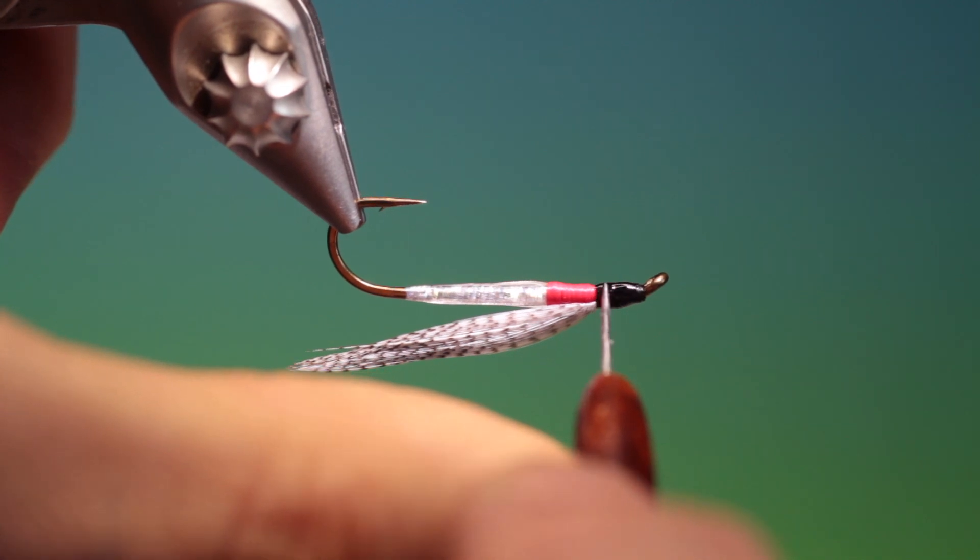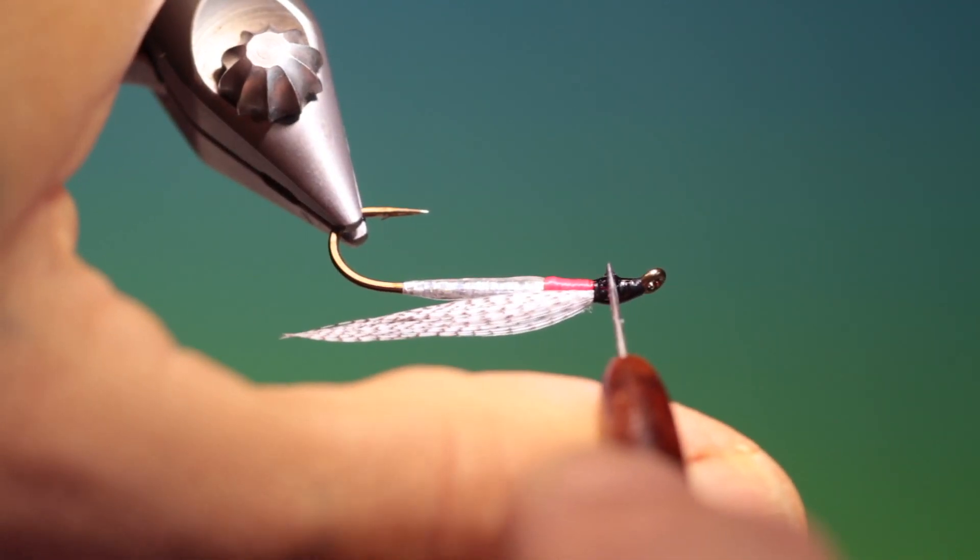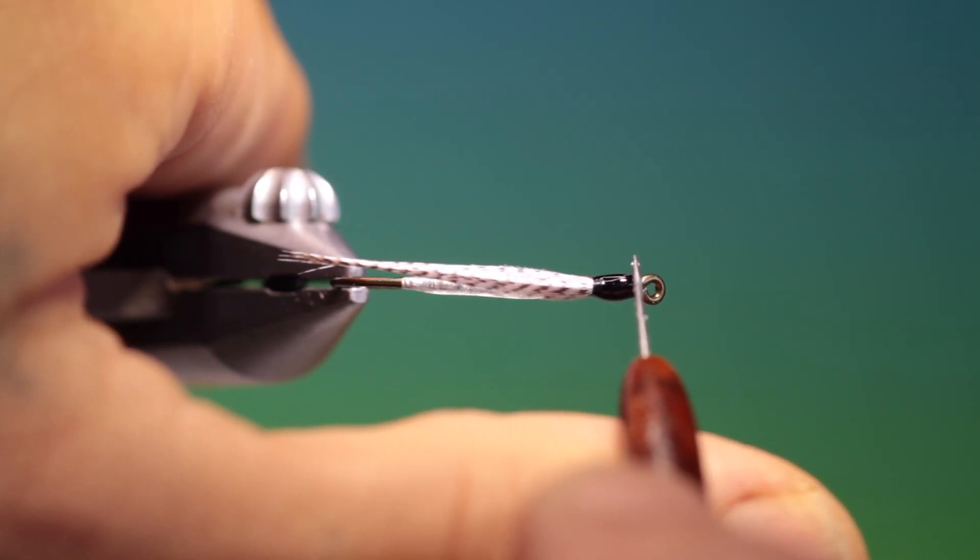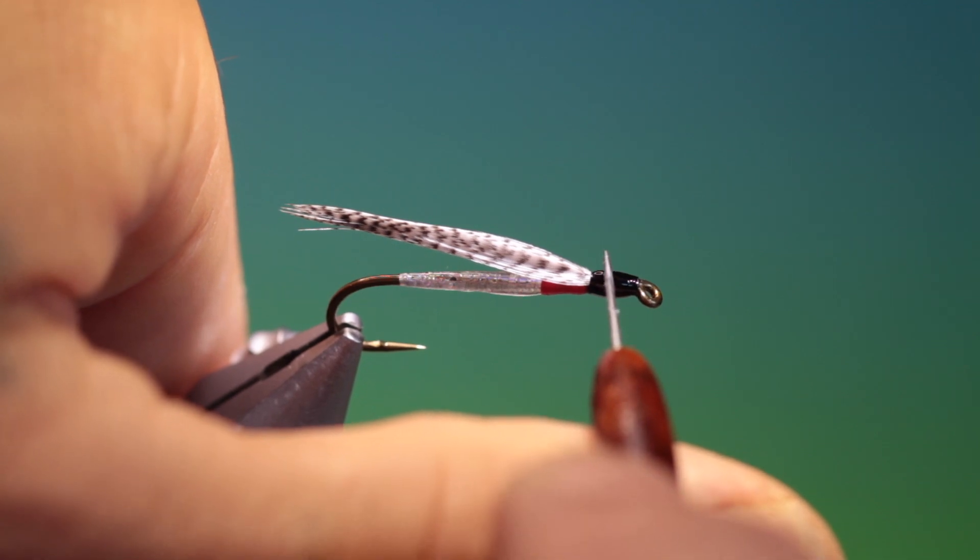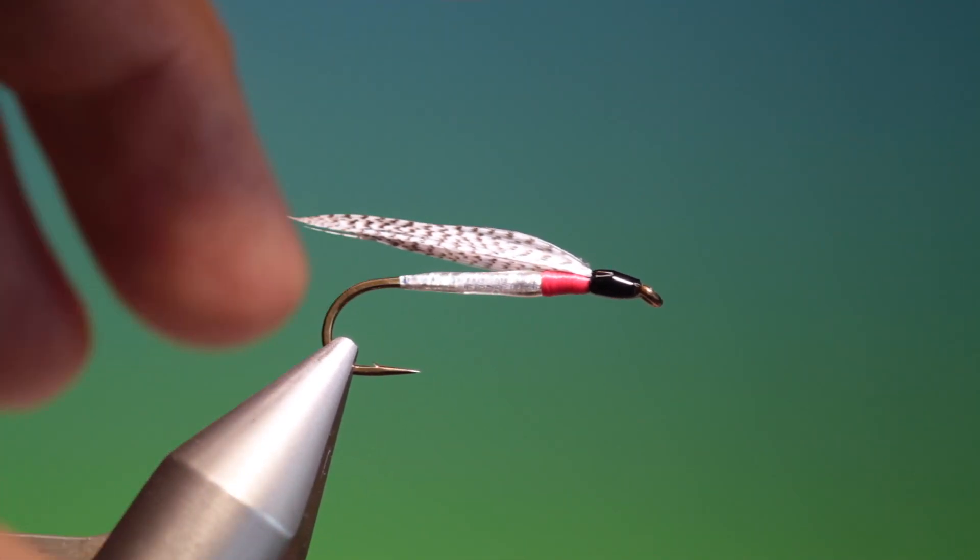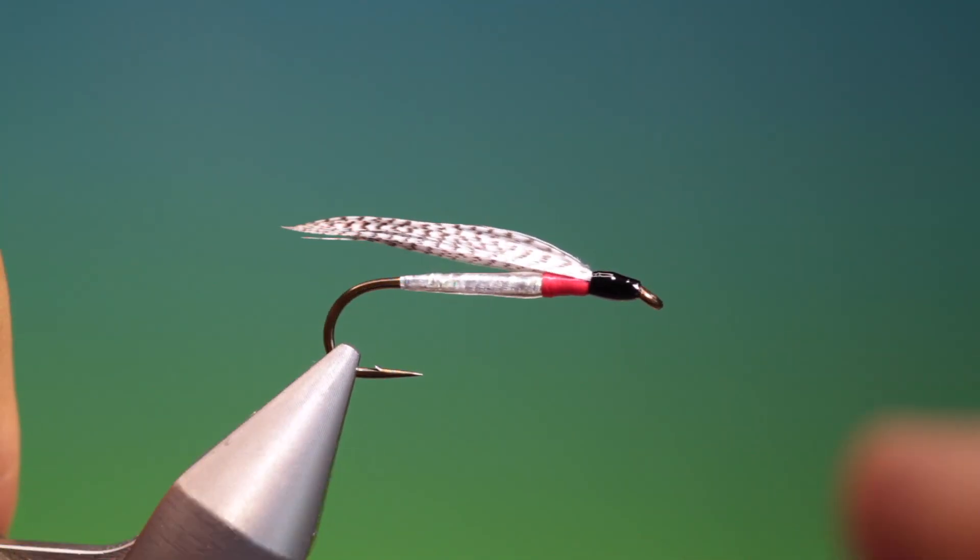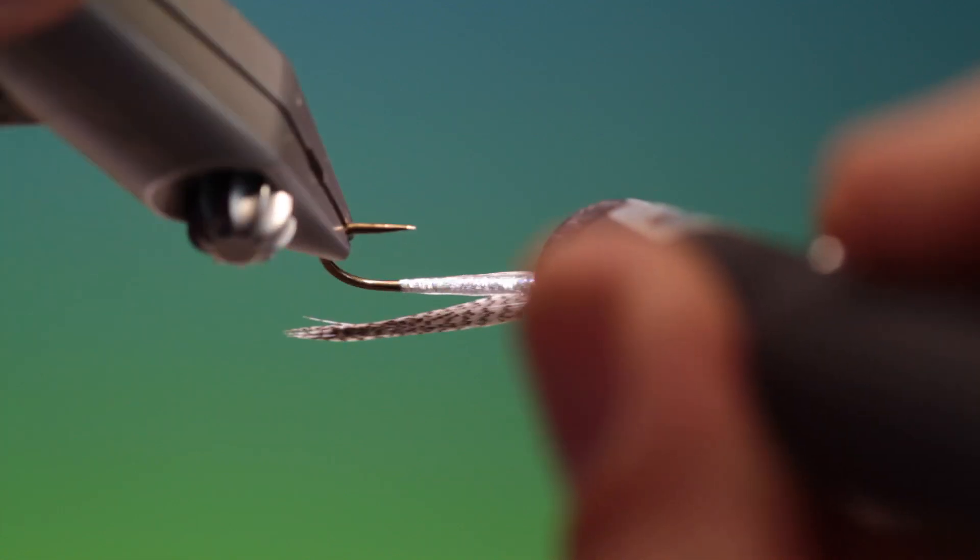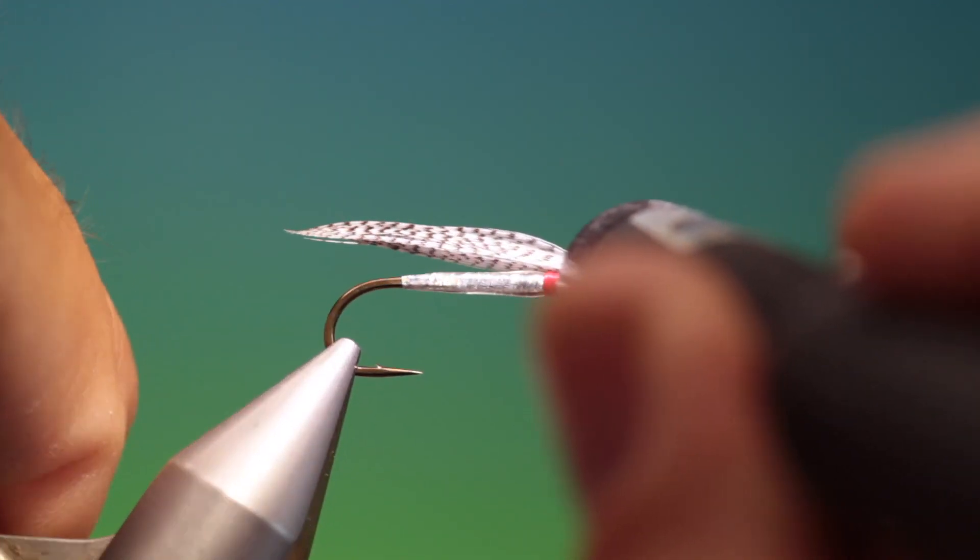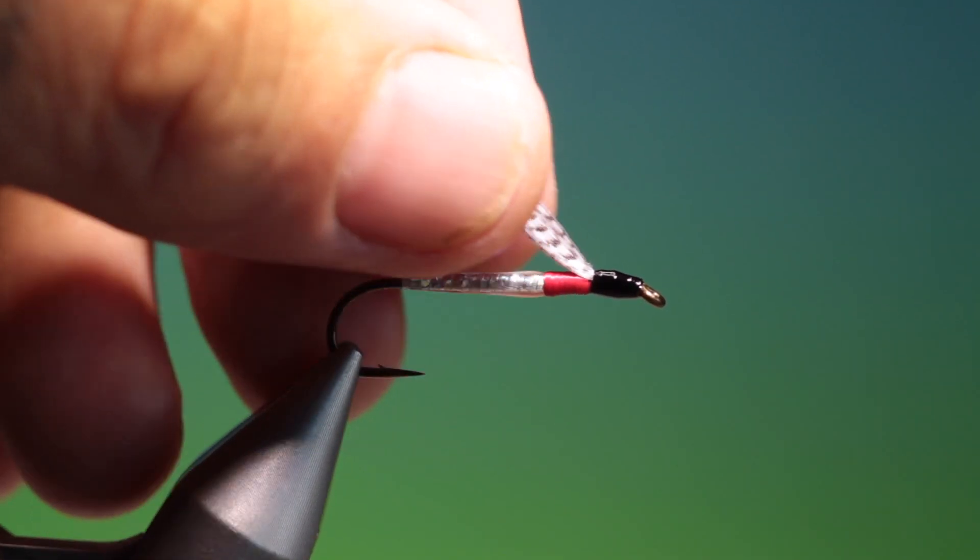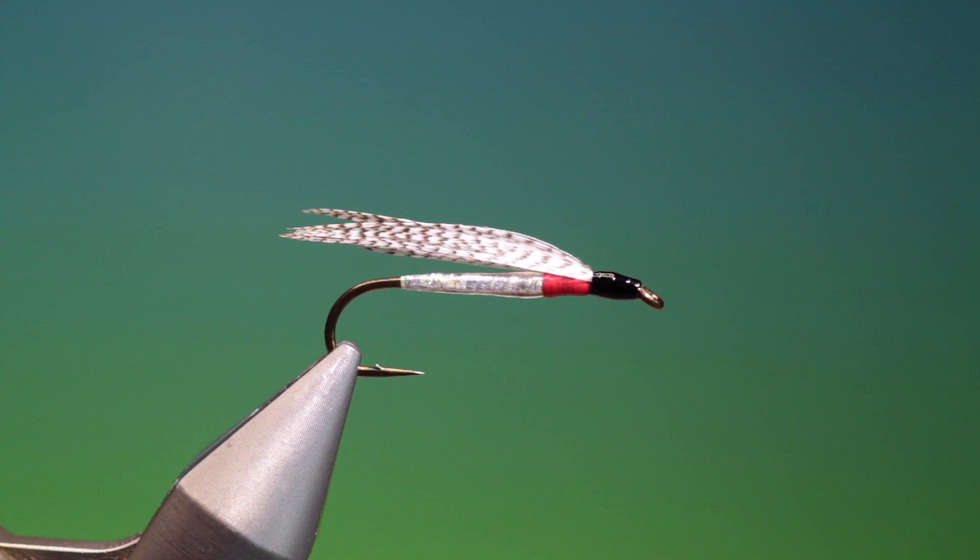And again, I find it much easier to use a dubbing needle to apply the UV resin than straight from the tube. It's much more precise. That's looking good. So we'll give that a blast with the torch. Looking good.